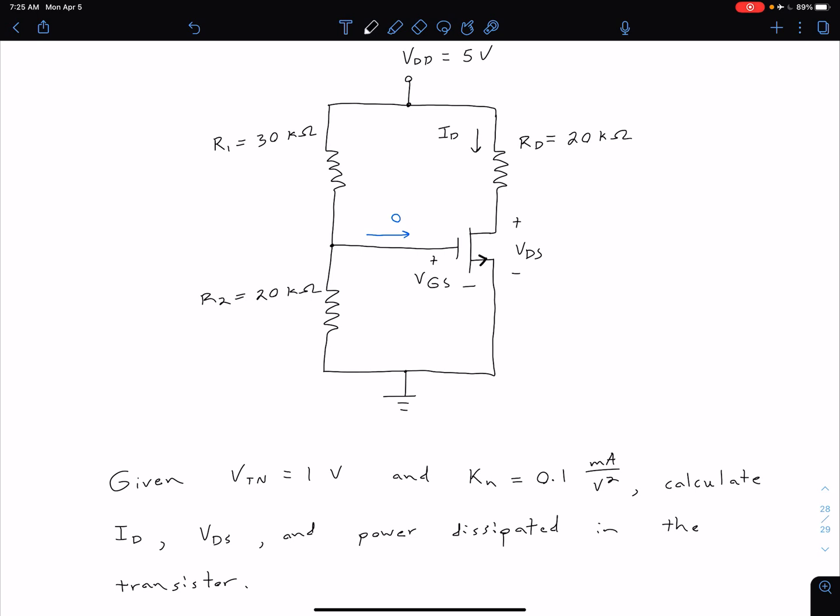A quick note before we get into our calculations is note that for these parameters, I'm using an uppercase parameter and uppercase subscripts. And that's because we're only dealing with DC values right now. So that same parameter notation we use when we're talking about BJTs and diodes is still going to be relevant here.